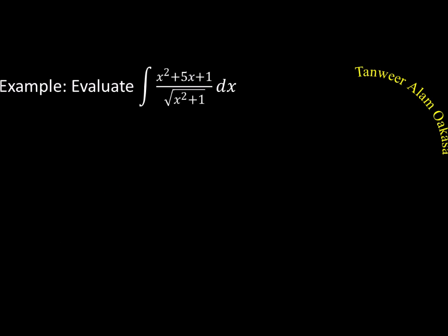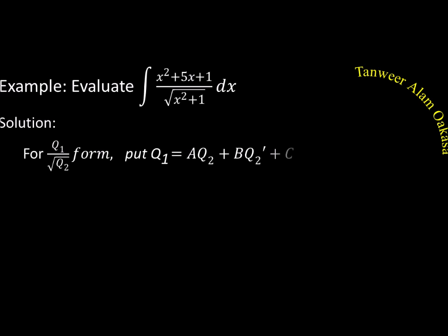Let's take an example of the Q1/√Q2 form. In the numerator we have one quadratic and in the denominator another quadratic. We write the numerator as A·Q2 + B·Q2' + C in terms of the denominator.